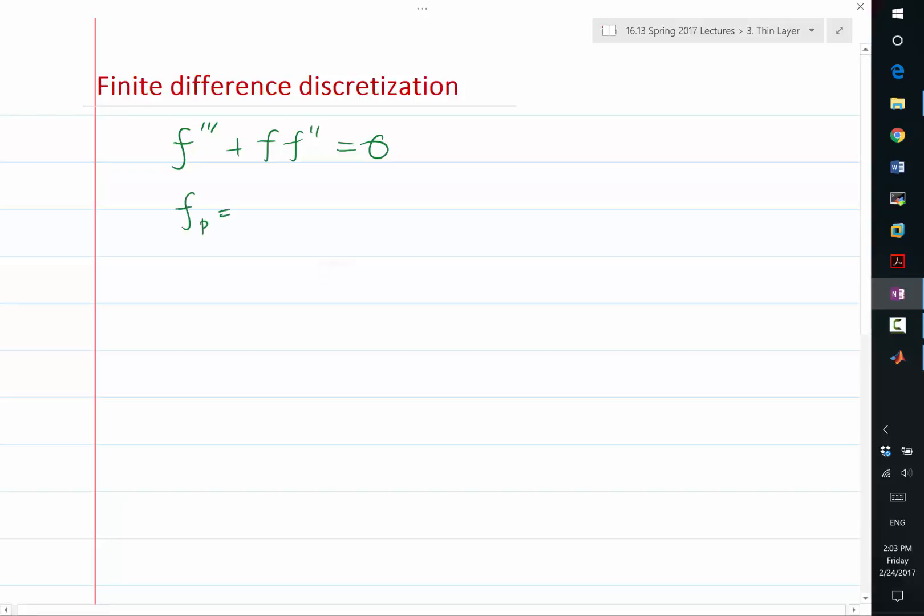So let's just define fp to be f prime. Let's define fpp to be fp prime. Then this equation simply becomes fpp prime plus f plus fpp is going to be equal to 0, right?